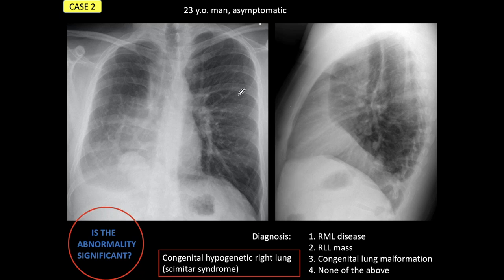We are not going to make the diagnosis with just those facts, but we have to suspect congenital hypogenetic lung syndrome and look for the scimitar vein. You see what you look for, and you look for what you know. In this case, if you look for a scimitar vein, you are going to find it going here, into the mass. Once you discover the scimitar vein, you can make a 100% diagnosis of hypogenetic right lung syndrome.